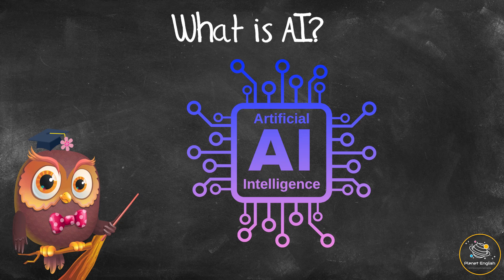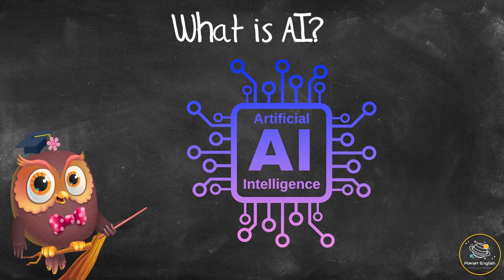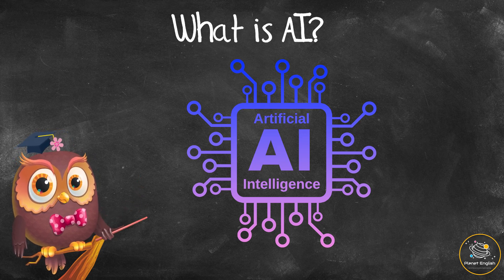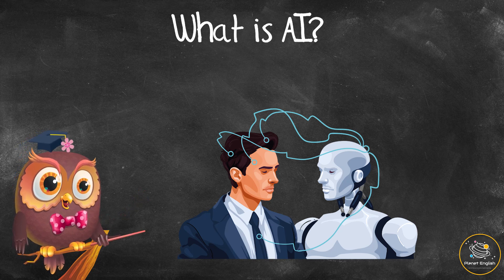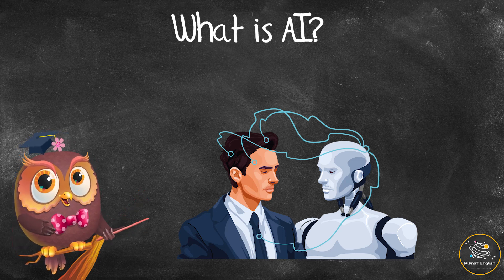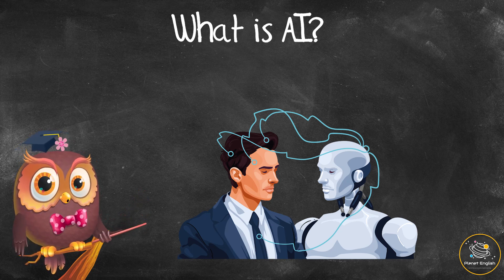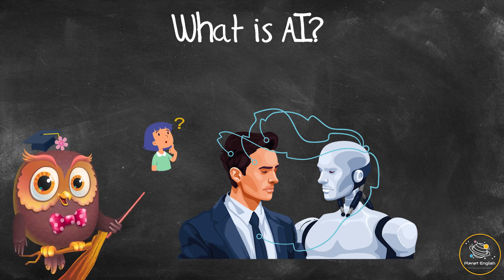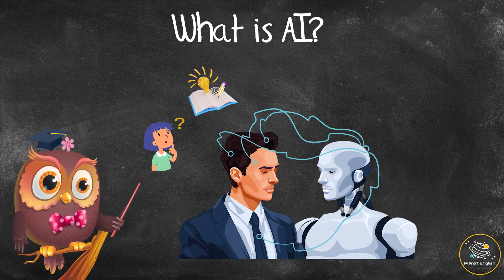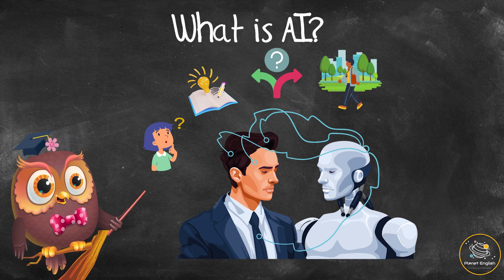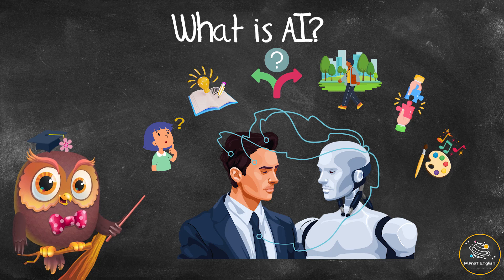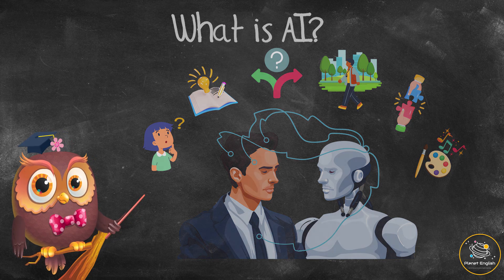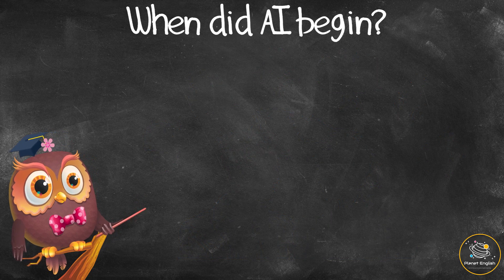What is AI? AI, or artificial intelligence, is the ability of a computer or a computer-controlled robot to think and learn like a human being. With AI, computers can perform tasks that are normally done by people, such as thinking, learning, making decisions, interacting with the environment, solving problems, and even creating art or music.